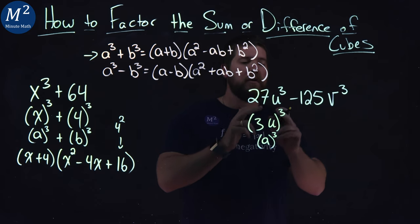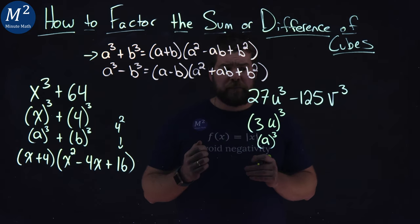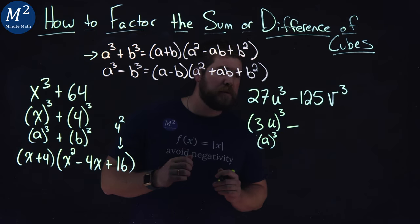Again 3 cubed is 27. u cubed, u cubed. What about the second part right here?